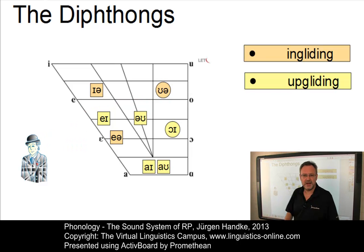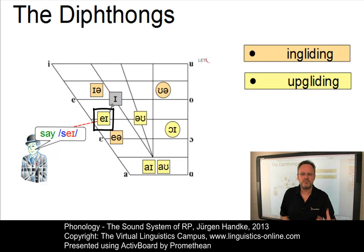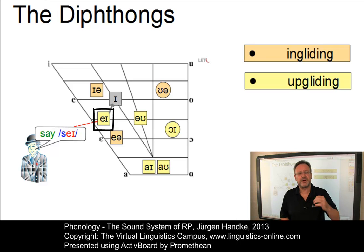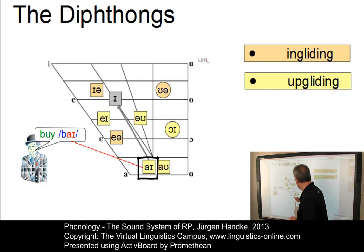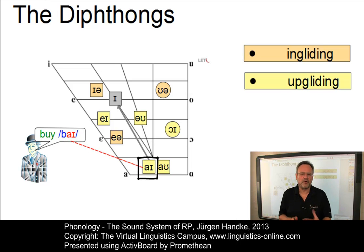Let us now look at the upgliding diphthongs. The first, as in 'say,' looks simple but is often monophthongized by non-native speakers — there are tendencies in English to monophthongize this diphthong, but not in RP. The diphthong as in 'by' is relatively unproblematic — it starts with a low central A and ends in a short E, though non-native speakers sometimes make the offset a little too high.